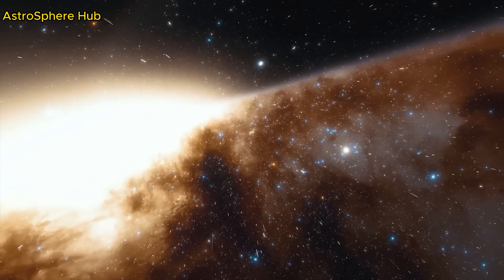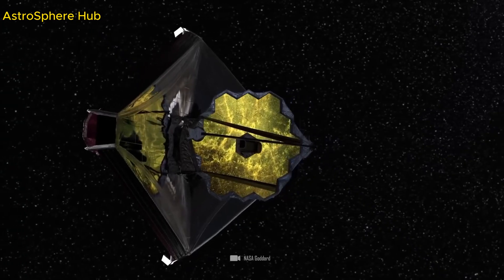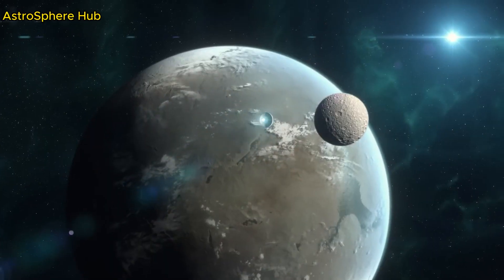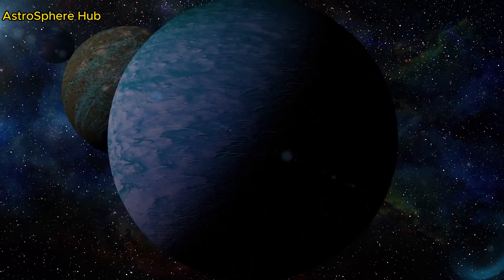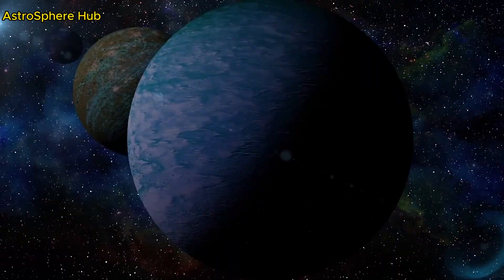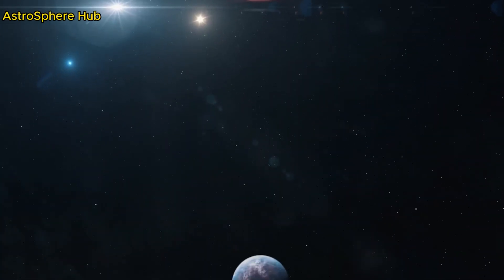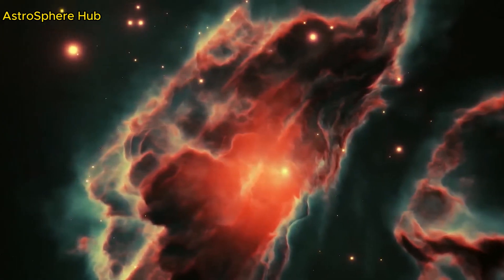17 years later, our telescopes revealed the star's first planets. And the very next year, we uncovered four more planets orbiting the M-type star. Today, TRAPPIST-1 is the most studied planetary system aside from our own.